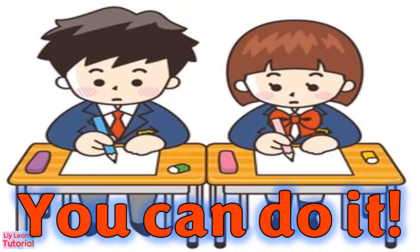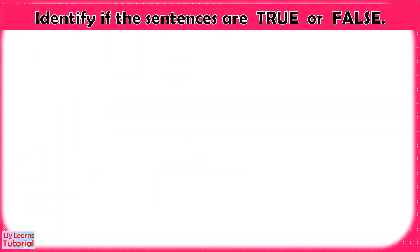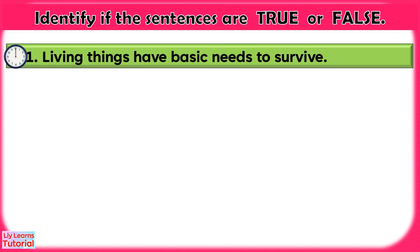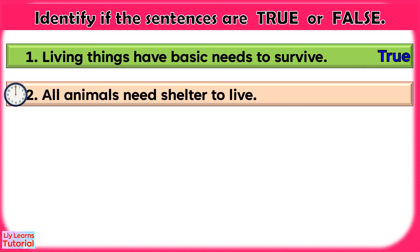Now get a piece of paper to write your answer. You may pause the video if you need more time. Identify if the sentences are true or false. 1. Living things have basic needs to survive. — True. 2. All animals need shelter to live.